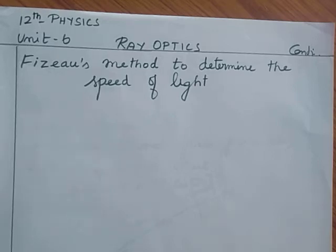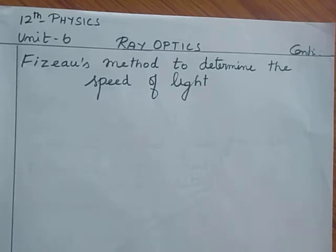Hello students, happy morning. This is a Class 12 physics unit 6 ray optics continuation video. In today's class, let me see the Fizeau method to determine the speed of light.